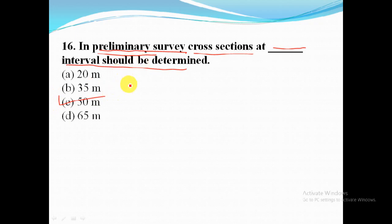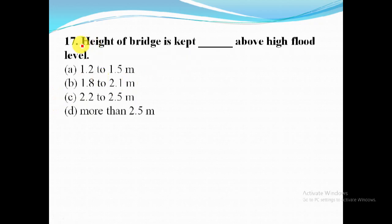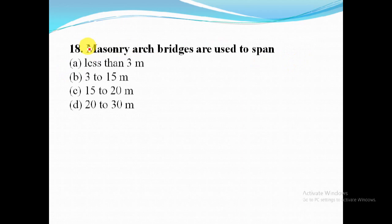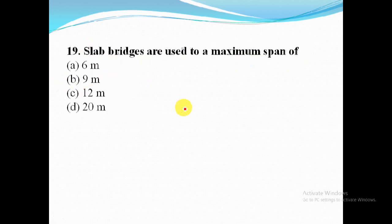Height of bridge is kept 1.2 to 1.5 meter above high flood level. Masonry arch bridges are used to span 3 to 15 meter. Slab bridges are used to a maximum span of 9 meter.